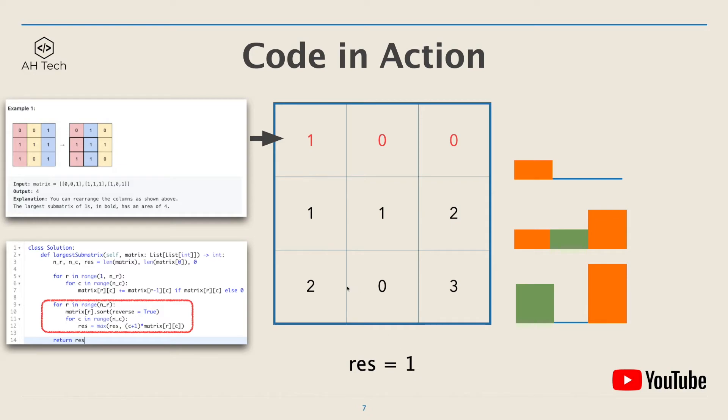And then the second row, again, reverse sort the row. So now the row will become 2 1 1. And the maximum area of the sum matrix or the rectangle we can get is 2, which is either the area of the first bar or the area formed by the first and second bar here.